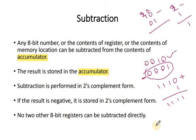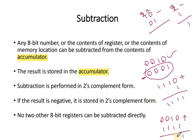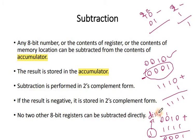We add 0010 plus 1111. Going bit by bit: 0 plus 1 is 1; 1 plus 1 is 0 with carry 1; 1 plus 1 plus carry is 0 with carry 1; 0 plus 1 plus carry is 0 with carry 1. The last carry is discarded in 2's complement addition, and we get the result 1, which is correct.